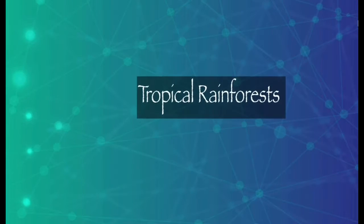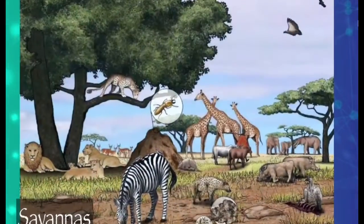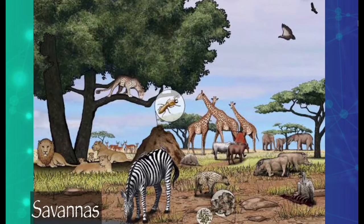Let's look at the tropical rainforests. Tropical rainforest is very unique because there are four different layers: the emergent layer, canopy, understory, and forest floor. The emergent layer has lots of sunlight in it, while the forest floor is very dark and damp. That's why in every layer there live different kinds of animals and different kinds of plants.